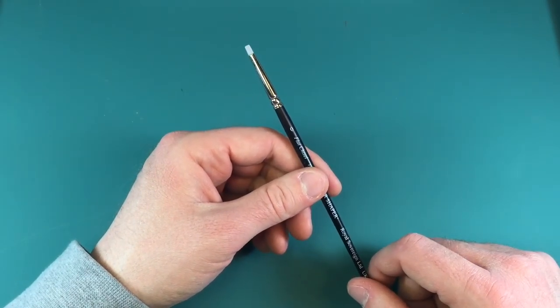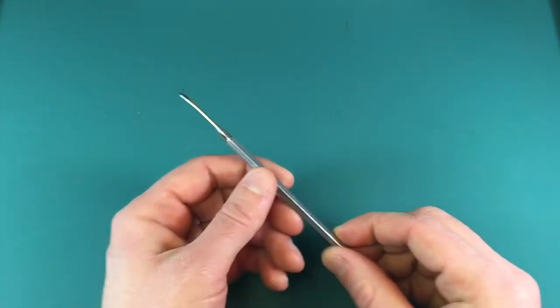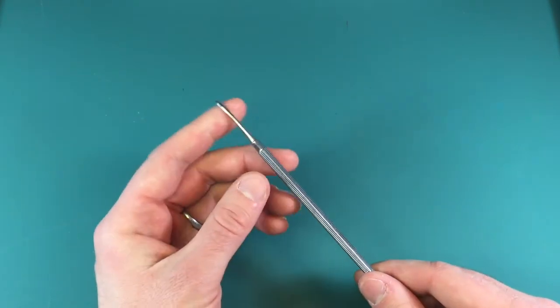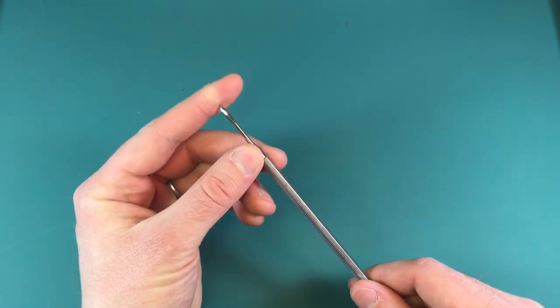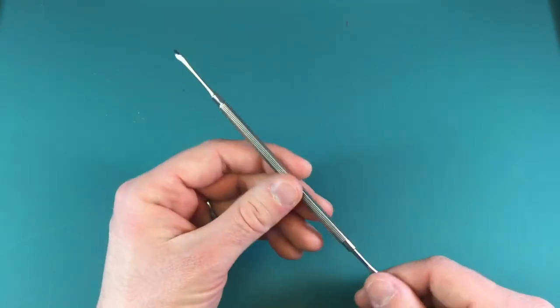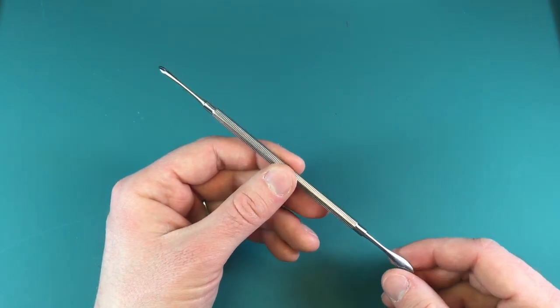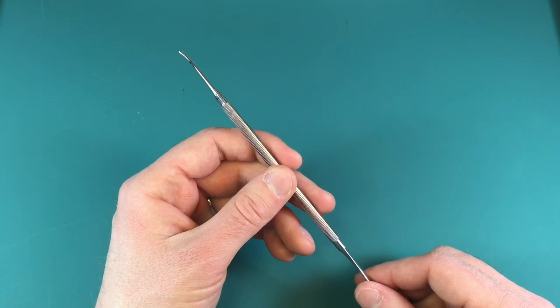Next up is a tool called the wax five. This is really just a burnishing tool and it has two ends as you can see, but I only ever use this side, which is a large tapered burnishing tool. Any sort of tool like this will work, this is just the one I happen to get.